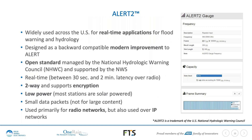Starting with Alert 2: it's widely used across the U.S. for real-time applications, primarily for flood warning and hydrology. It was designed to be backward compatible with Alert, which has been in place since the early 1980s. Alert 2 provides all the modern conveniences of a modern telemetry platform. It's an open standard managed by the National Hydrologic Warning Council and supported by the National Weather Service.